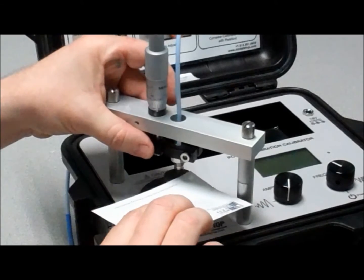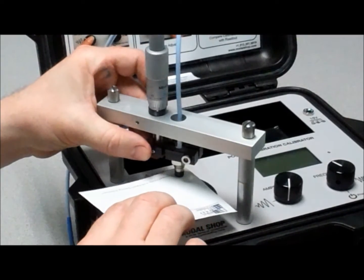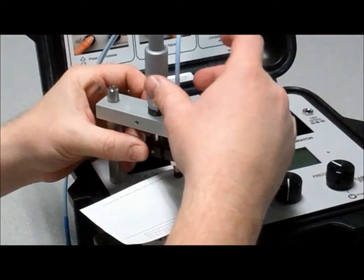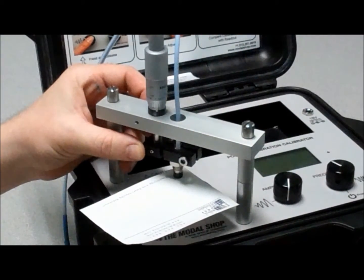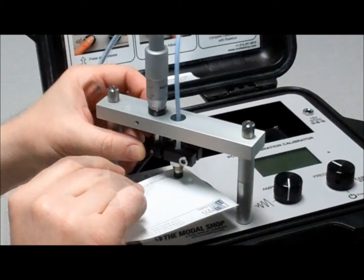In order to get the gap set at approximately 3 mils, place a standard piece of paper between the probe and target. Lower the probe until you feel drag on the paper.